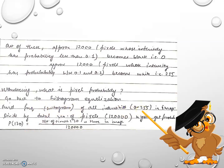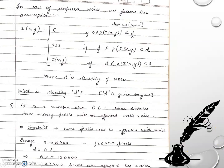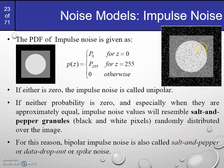Just like in histogram equalization, you look at how many times each intensity value appears. The probability of intensity 130, for instance, is the number of times it appears divided by the total number of pixels. So given d, you determine how many pixels are affected overall, then roughly half are affected by salt noise (intensity 255) and half by pepper noise (intensity 0), while the rest remain the same.